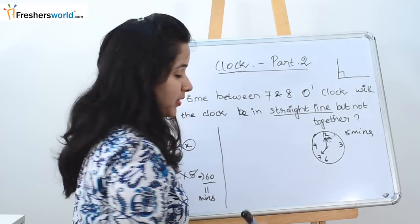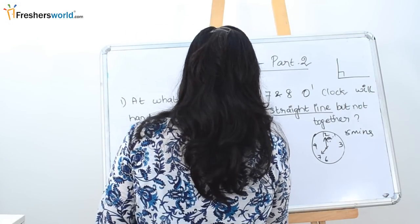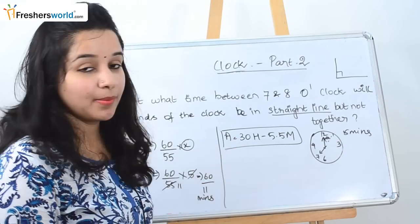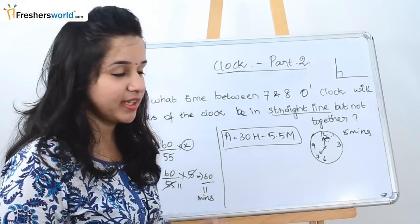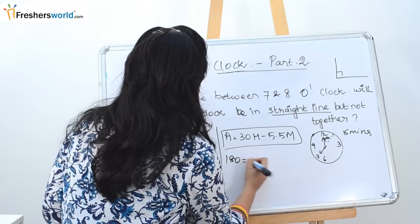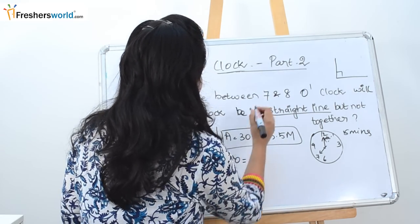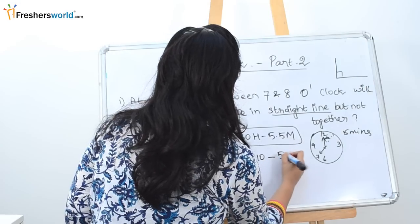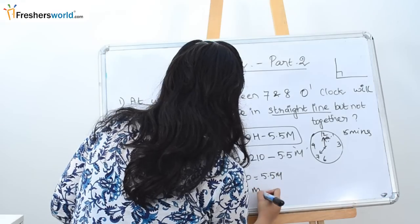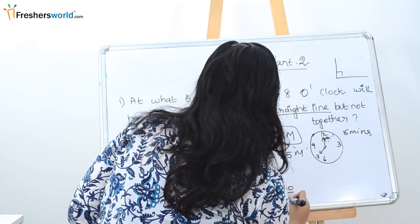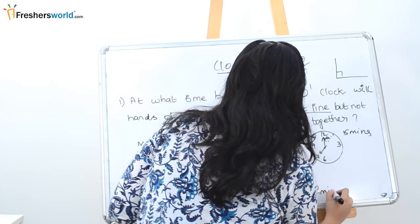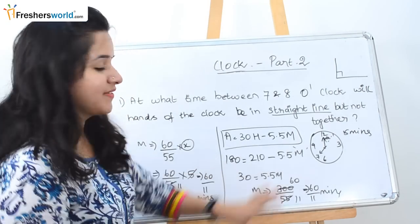Now solving using the formula A = 30H − 5.5M: the angle is 180 degrees (straight line), and H = 7, so 30 times 7 = 210. Therefore: 180 = 210 − 5.5M, which gives 5.5M = 30, so M = 300/55 = 60/11 minutes. Both methods give the same answer. It all depends on which method you find easier — you can use either approach to solve the problem.